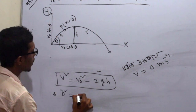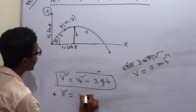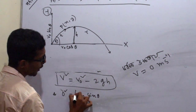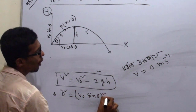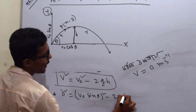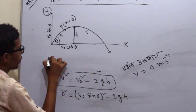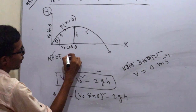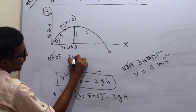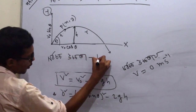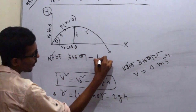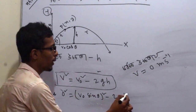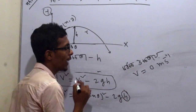I will say: v₀ sinθ whole square minus 2g·h equals the expression for vertical motion. So h sub s relates to the height at that point.